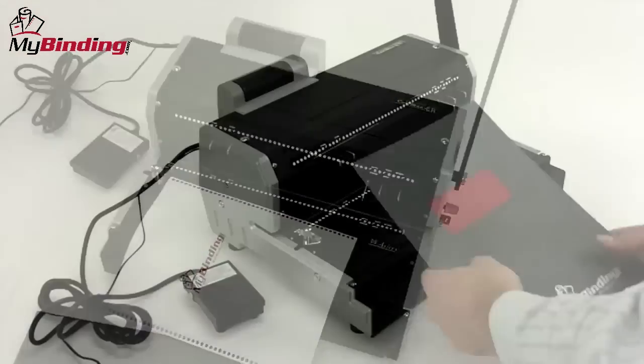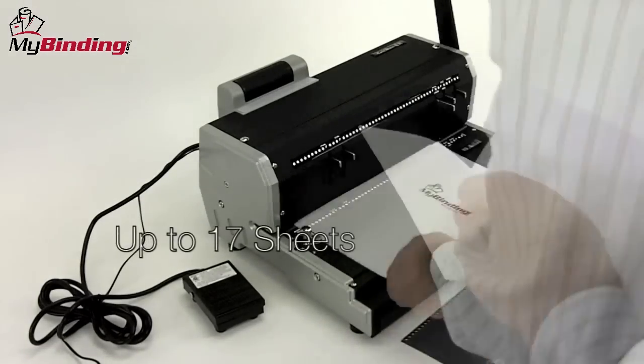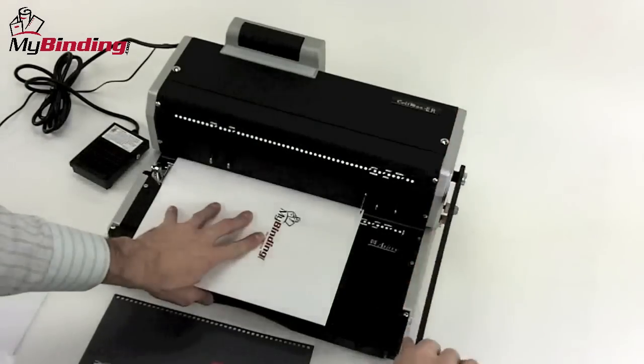All set. Starting with the covers, punch through your entire document till all your holes are punched. The CoilMac ER has a punch capacity of 17 sheets of 20lb paper per lift.